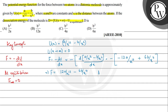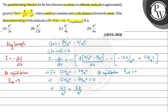We have already established that at equilibrium the net external force equals zero. So 12a/x¹³ minus 6b/x⁷ = 0, which implies 12a/x¹³ = 6b/x⁷, and therefore x⁶ = 12a/6b = 2a/b.